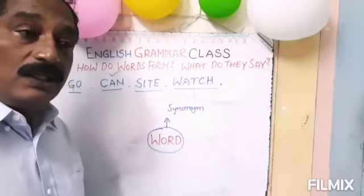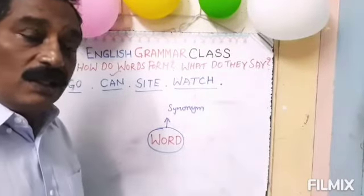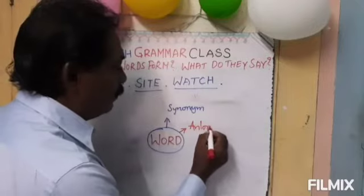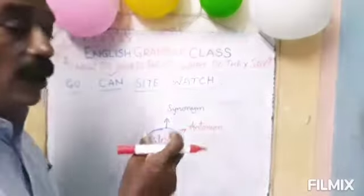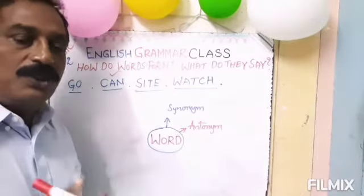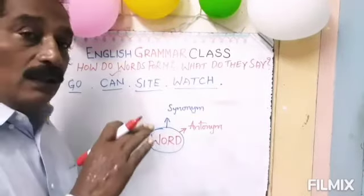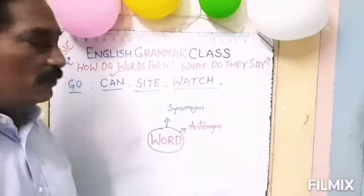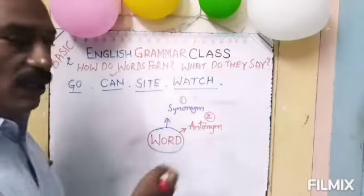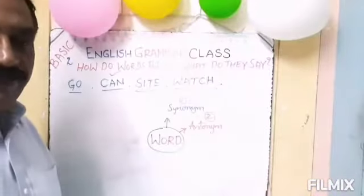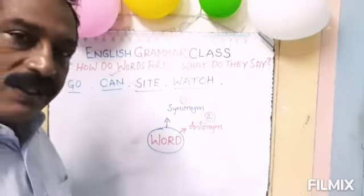The second thing that a word tells us is antonym. Antonym — what do you mean by antonym? Antonym is an opposite word. Every word has its antonym. Opposite may be, may not be, but most words have antonyms. Antonym means opposite meaning. What is the opposite meaning for the word 'go'? It is 'come'. Go and come are antonymous to each other.